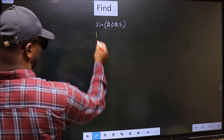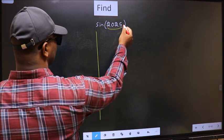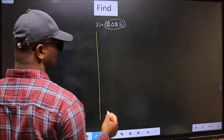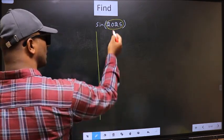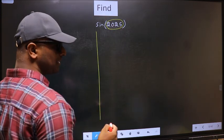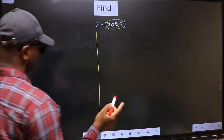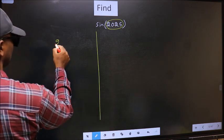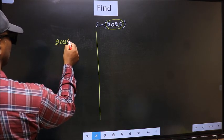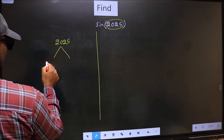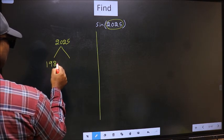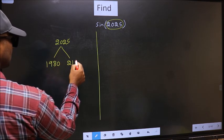See, here we have 2025. Now you should check: 2025 lies between which two multiples of 180? What I mean is, 2025 lies between 1980 and 2160.